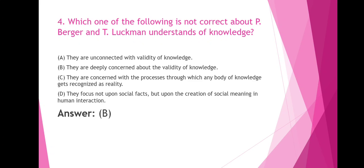Which one of the following is not correct about P. Berger and T. Luckmann's understanding of knowledge? Option A: They are unconnected with validity of knowledge. Option B: They are deeply concerned about the validity of knowledge. Option C: They are concerned with the process through which a body of knowledge gets recognized as reality. Option D: They focus not upon social facts but upon the creation of social meaning in human interaction. The correct answer is Option B — they are deeply concerned about the validity of knowledge.